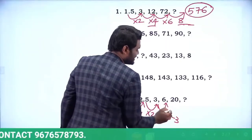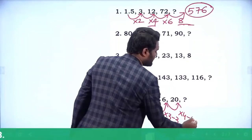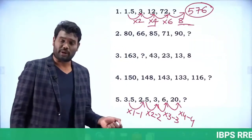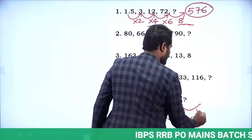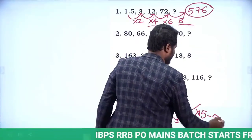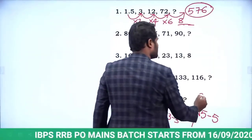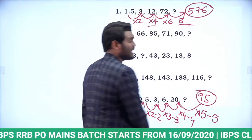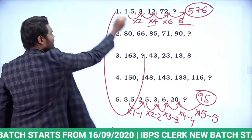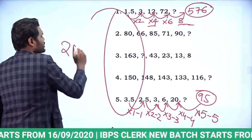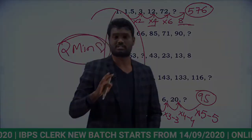Continuing: 3 × 3 − 3 = 6, and 6 × 4 − 4 = 20. So the next term is 20 × 5 − 5 = 100 − 5 = 95. The answer is 95. All five questions can be solved in just 2 minutes.